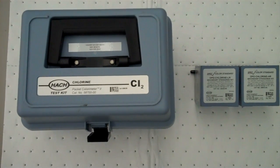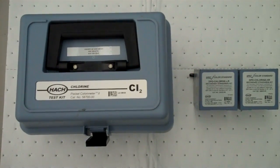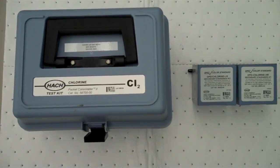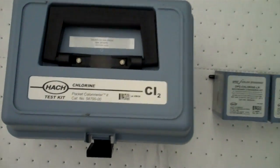All right, today we're going to cover the Hatch Colorimeter. This is what we use for testing of potable water out in the field during a disaster.